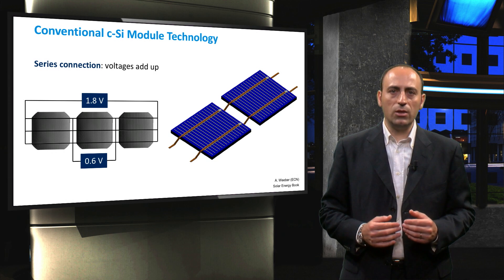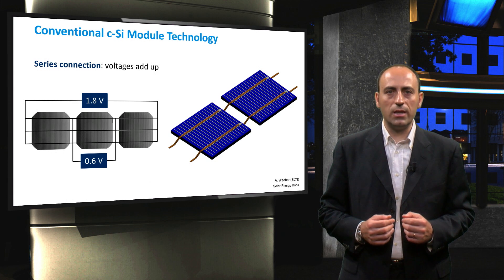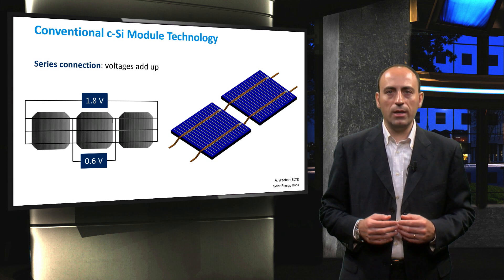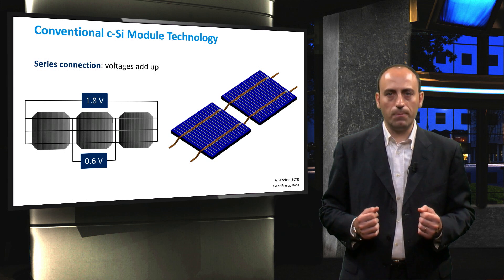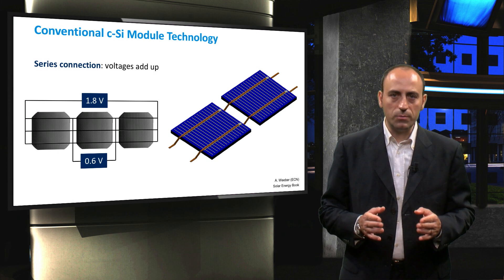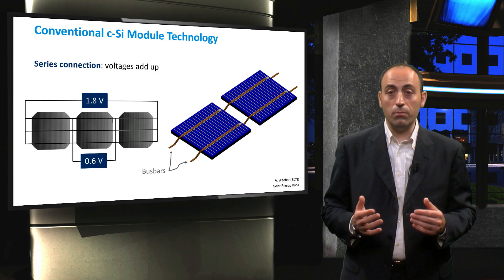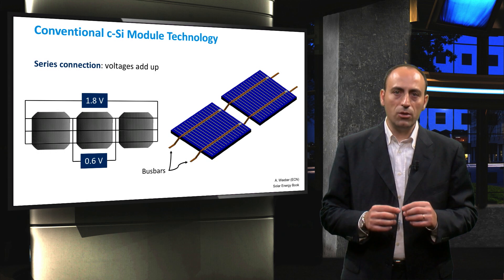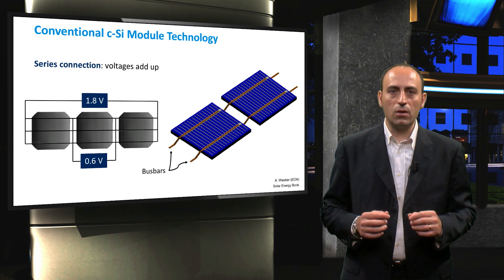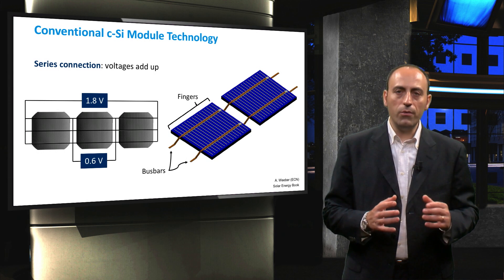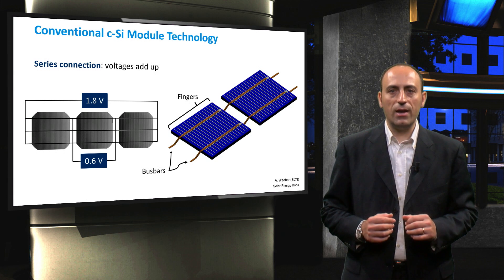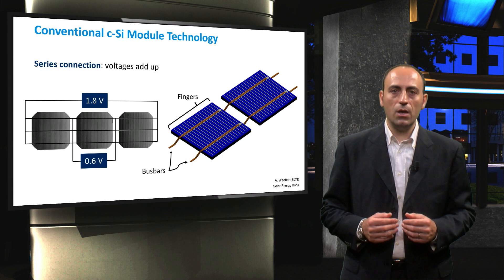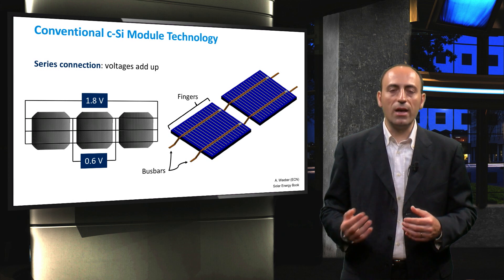At the front side of a conventional crystalline silicon cell, we can usually find a silver-based H grid, named after its particular shape. The two widest metal strips printed on the cell, also called bus bars, represent the arms of the H, and the other perpendicular thin lines are called fingers. On the rear side, a fully metallized area is usually realized. In case of bifacial PV modules, the rear side does have a second H grid.